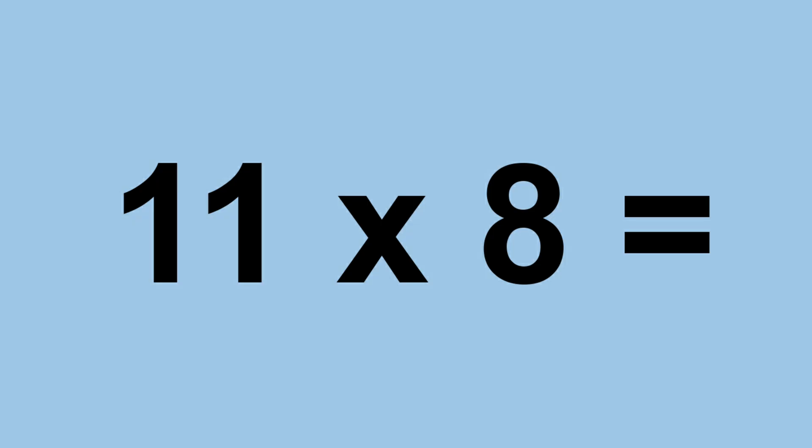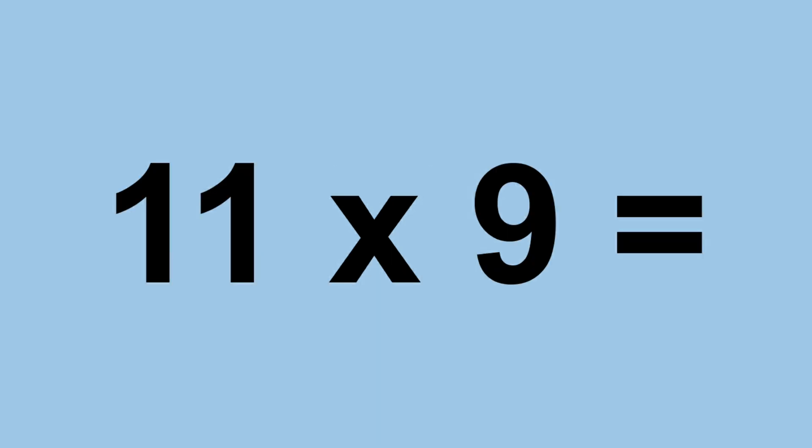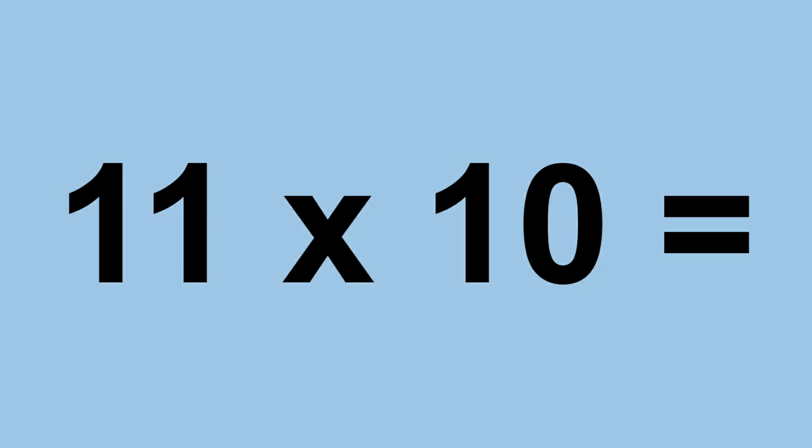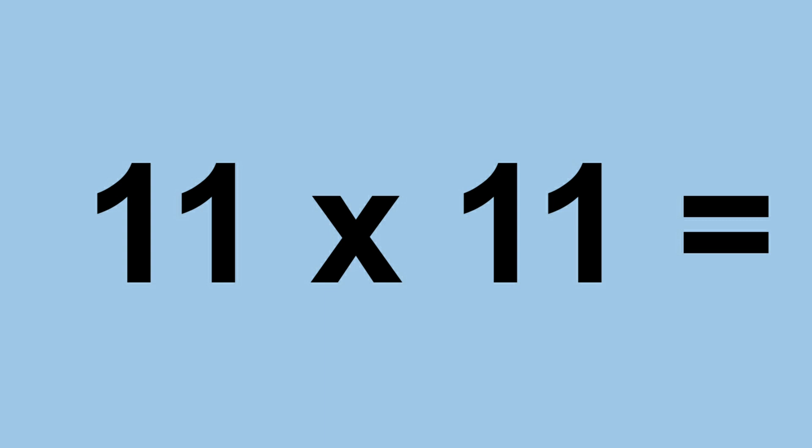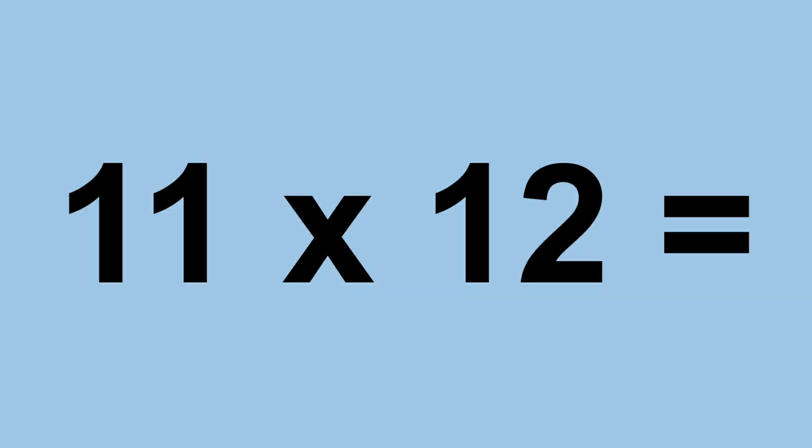Eleven times eight equals eighty-eight. Eleven times nine equals ninety-nine. Eleven times ten equals one hundred and ten. Eleven times eleven equals a hundred and twenty-one. Eleven times twelve equals one hundred and thirty-two.